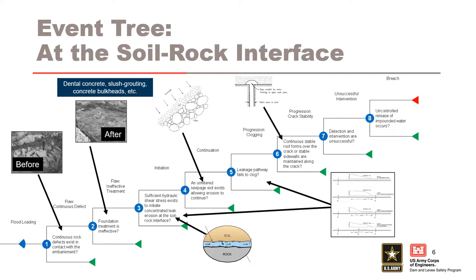In this example, the typical event tree for concentrated leak erosion was adapted to assess concentrated leak erosion at a soil-rock interface. Nodes assessing the effectiveness of foundation treatment and the potential for clogging, which could include swelling, were added. The influence of varying crack width across the flow path in the foundation on the gradient will be discussed at the end of this presentation.